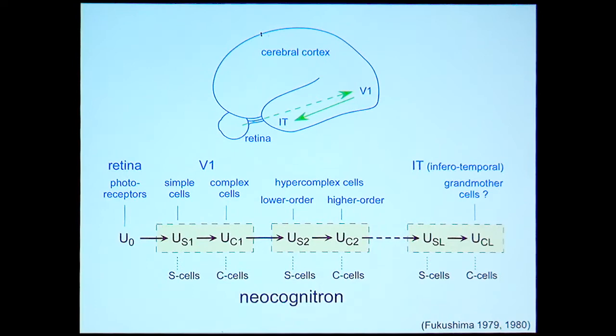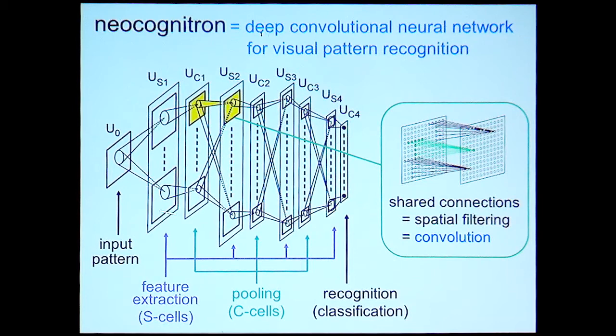The Neocognitron was originally suggested by biological neural networks, especially in the visual cortex. In the model, we have two types of cells, which we call S-cell and C-cell. S-cell is named after simple cells in the visual cortex, and C-cell is named after complex cells. It has a deep convolutional network architecture where the S-cell makes feature extraction, followed by a layer of C-cells that make a pooling operation. These stages of S-cells and C-cells are connected in a cascade.